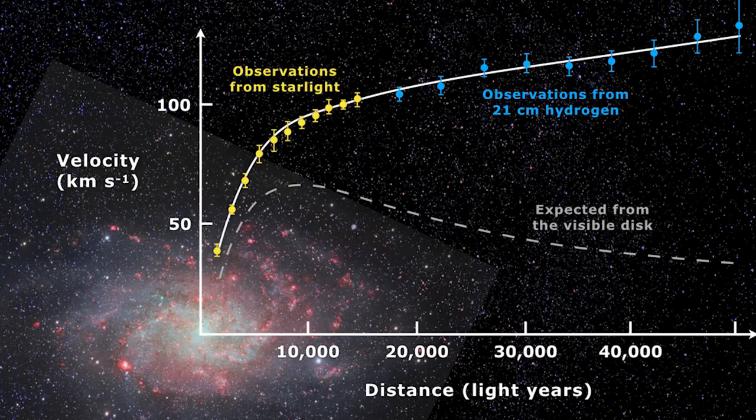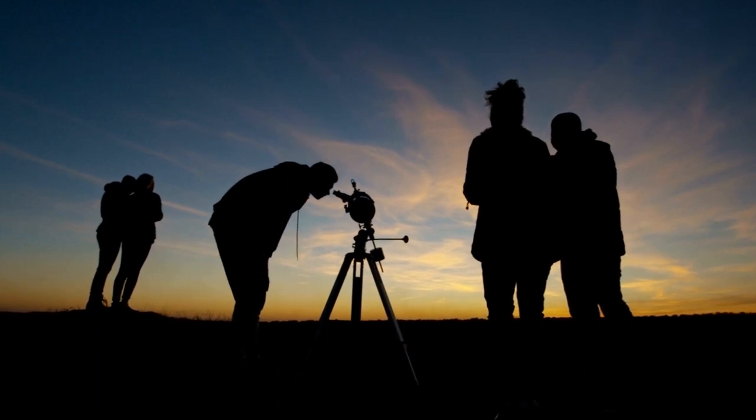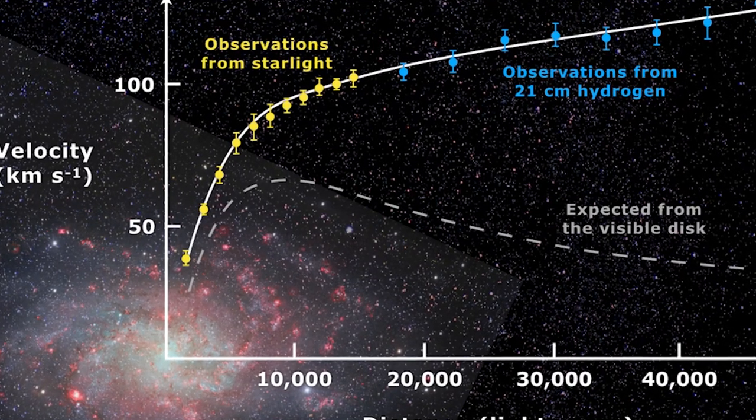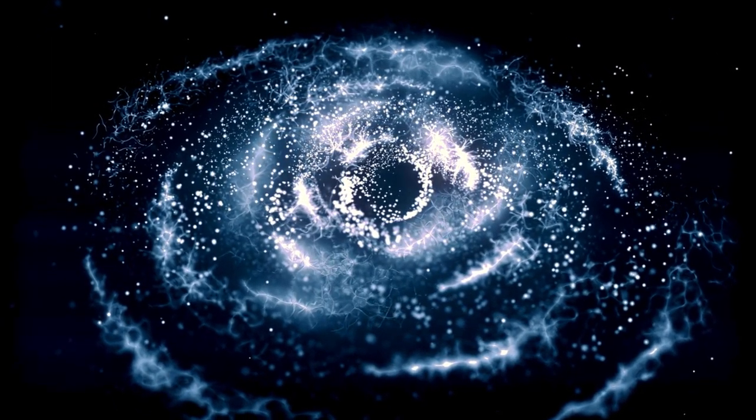According to Newton's laws, stars on the outskirts of a galaxy should move slower than those closer to the center. But what they found defied these laws: galaxies seemed to spin as if they had hidden mass holding them together. This was the first major clue that led to the discovery of dark matter.